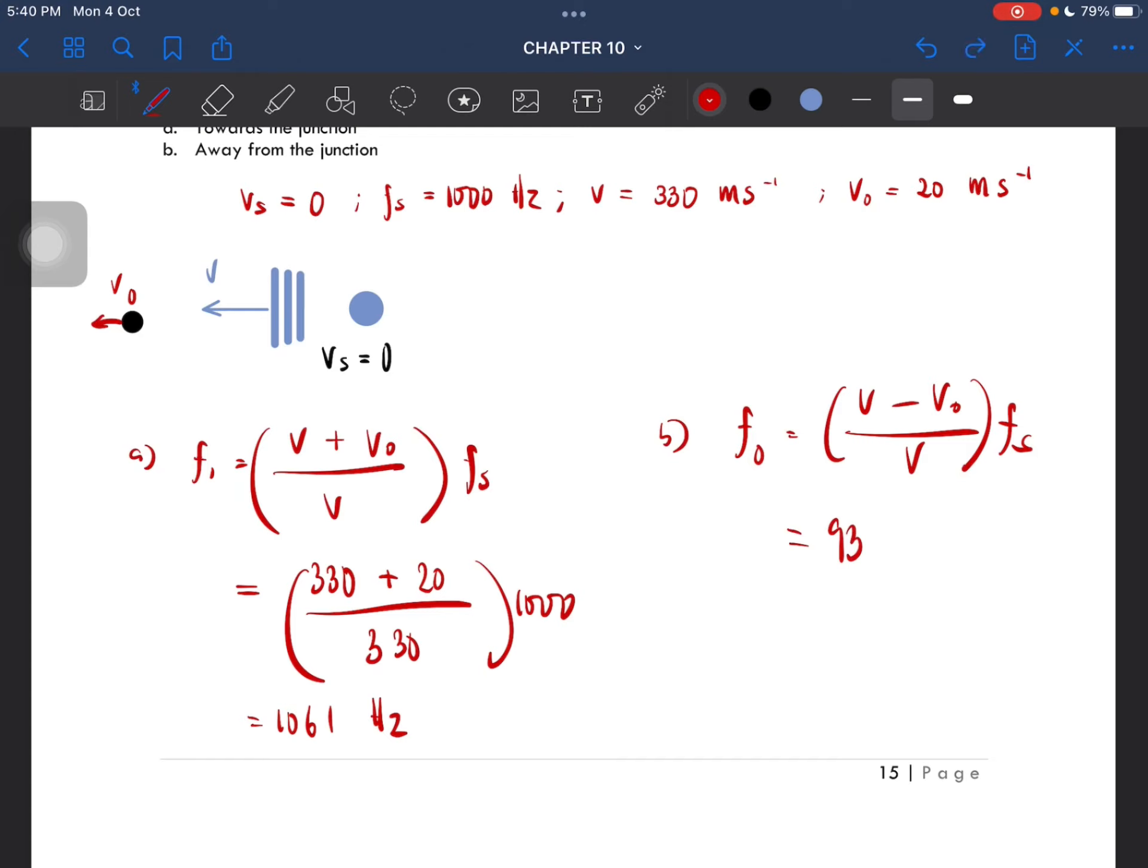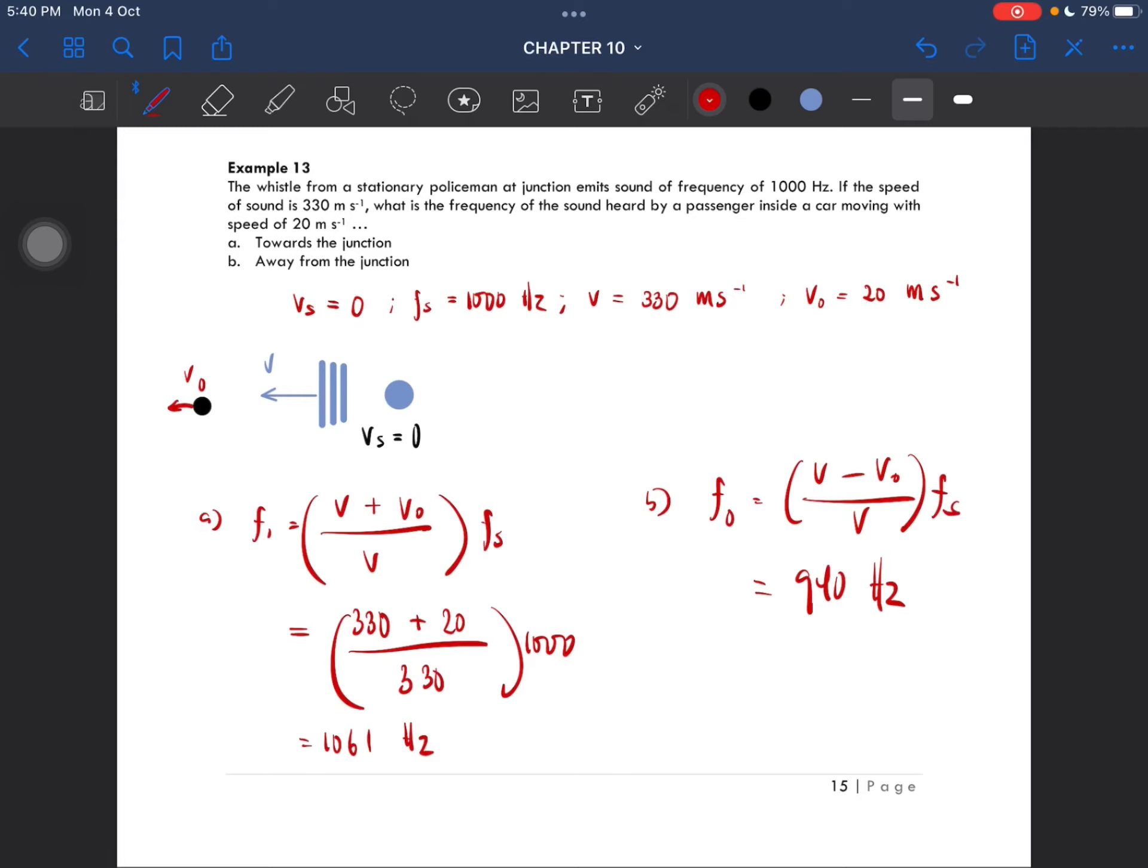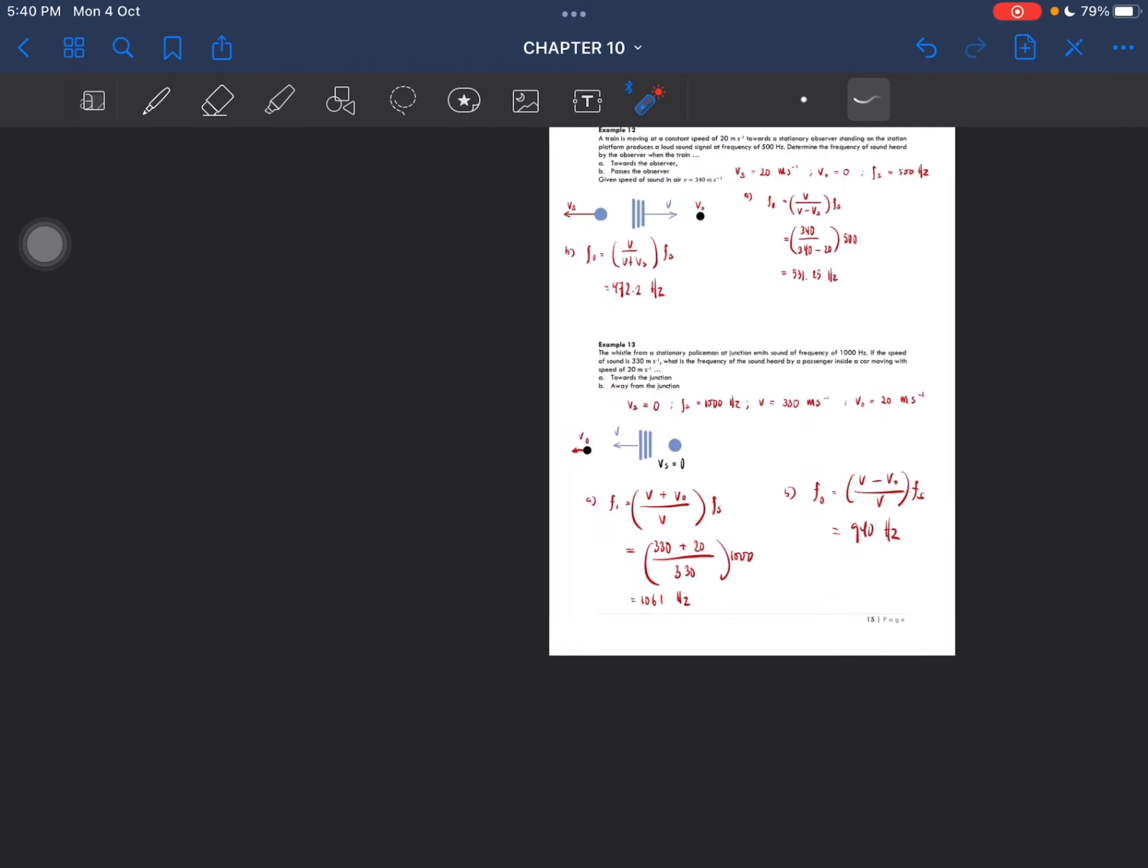So 940 hertz is the frequency heard by the observer. That is the solution for example 13. If you want to know whether you are doing it correctly, anything that is moving towards the source, the frequency must be greater than when moving away. If you get this smaller than that, or if you're getting bigger from this one, then you did it wrong. All right.